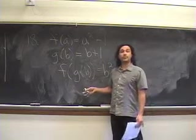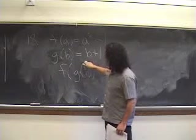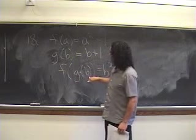Well again, let's just write down what we're told and see where it gets us. So by this second rule, g of b is just b plus 1.